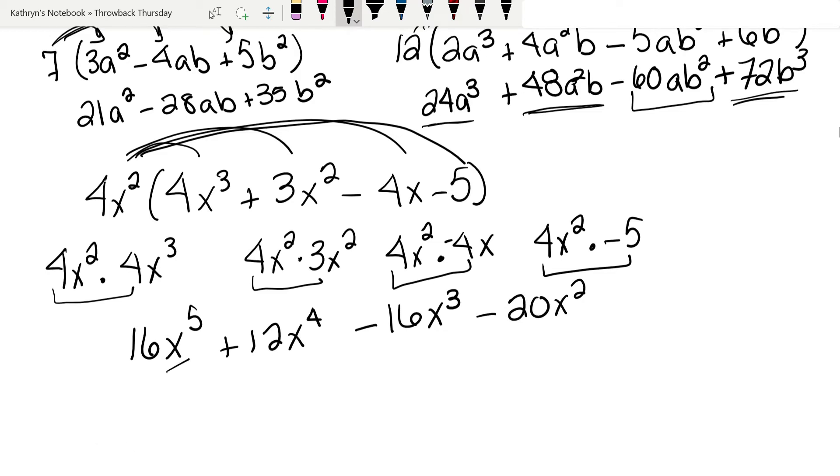Now when I look at these, I have an x⁵, x⁴, x³, x². It's actually in descending order, and none of those are like terms. So that turns out to be the solution for this one.